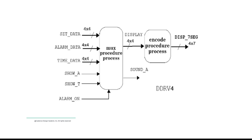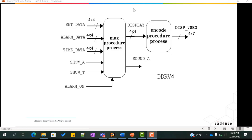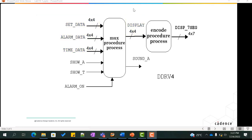Similarly, the ddrv.vhd component in Lab 7 operates on a single digit of the alarm clock. We need to modify this component to handle all four digits. For this, we need to modify the data type of set_data, alarm_data, time_data, and display from 4-bit standard logic vector to an array of arrays containing four elements. Each element represents a 4-bit array, declared as the enumerated data type display_4 in the p_alarm_types package.